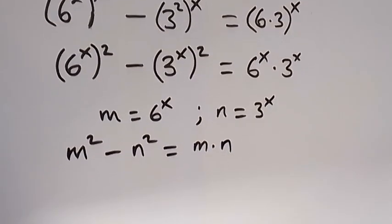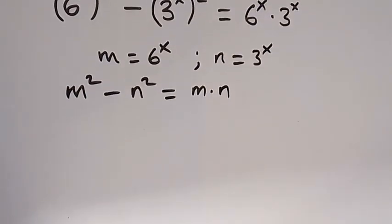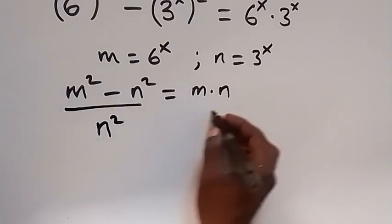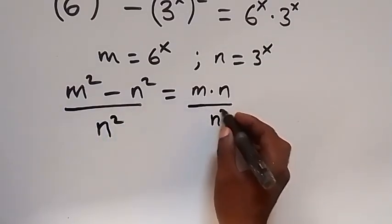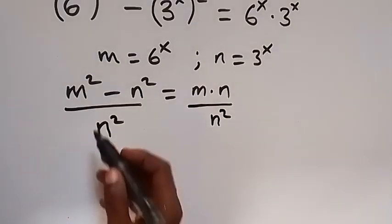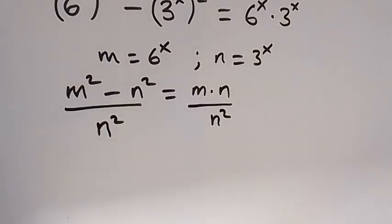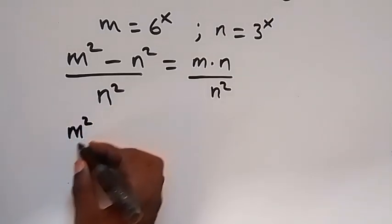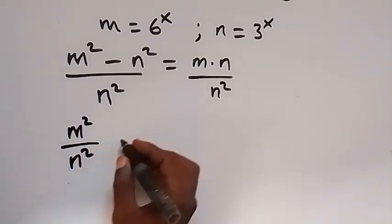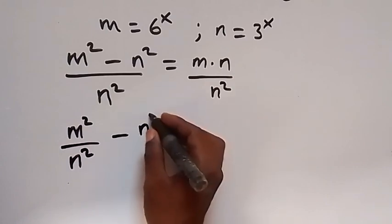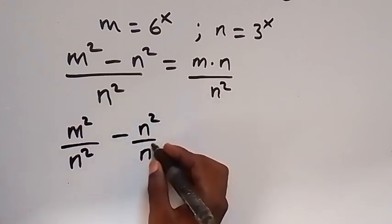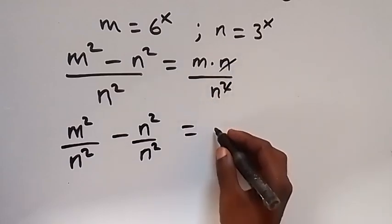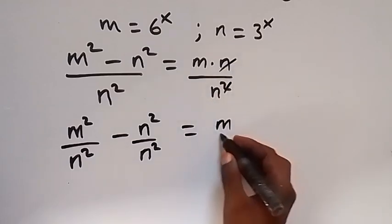In the next step, let's divide both sides by n squared. We separate the fraction, and this becomes m squared over n squared, minus n squared over n squared, equals m over n. The n squared over n squared cancels to 1, leaving m over n on the right.